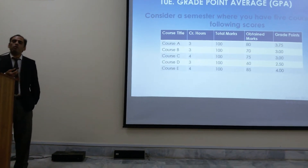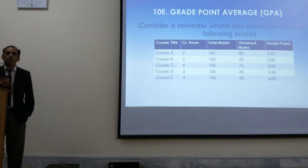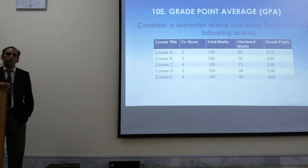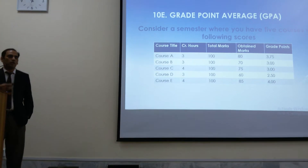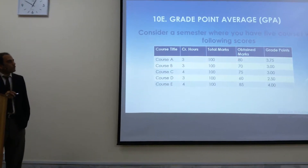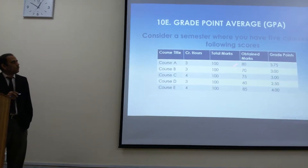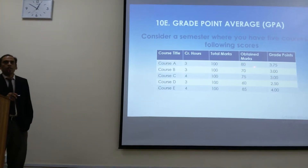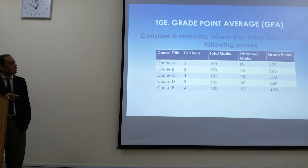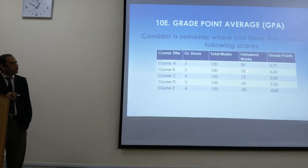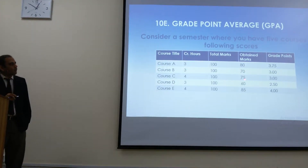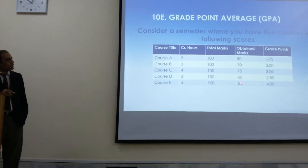You have gone through the whole semester, you have taken the assignments, everything — all adds up to these marks. For example, in course A you have scored 80 marks and 70 in course B, 75 in this and 60 in this.